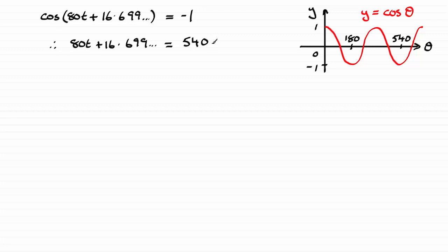And now we just need to rearrange this for t. And so if we subtract 16.699 from both sides and divide by 80, you'll get t to be equal to this. And if you work this out on your calculator, remember this is going to come out in minutes. It comes out at 6.541 and so on minutes.